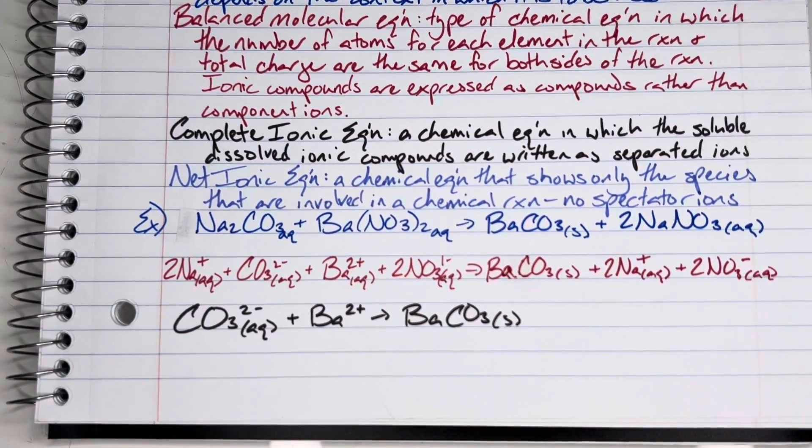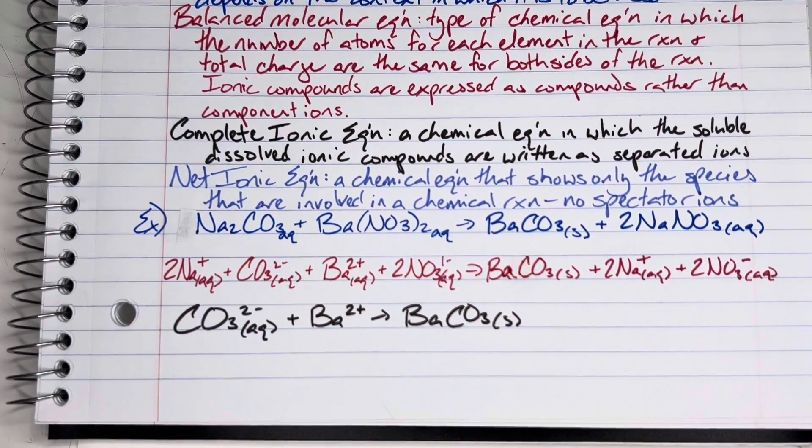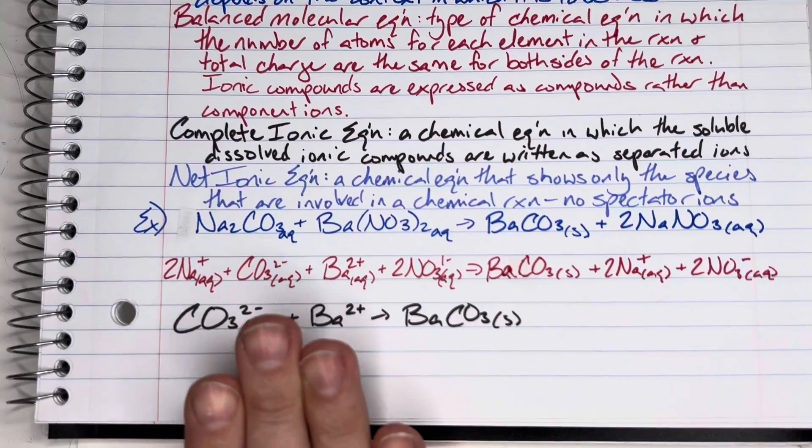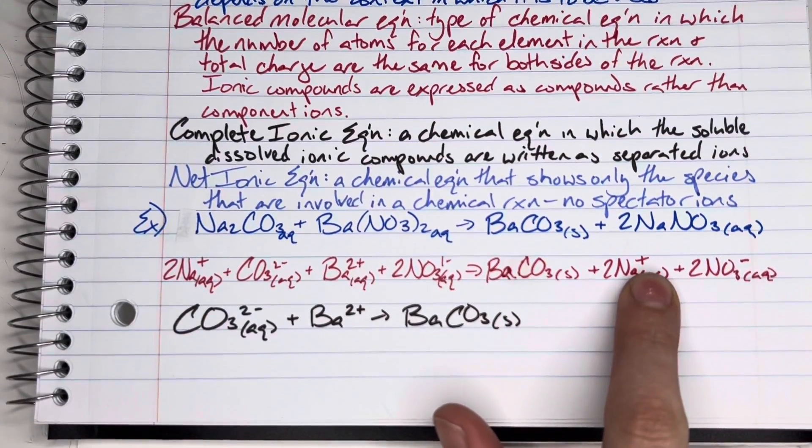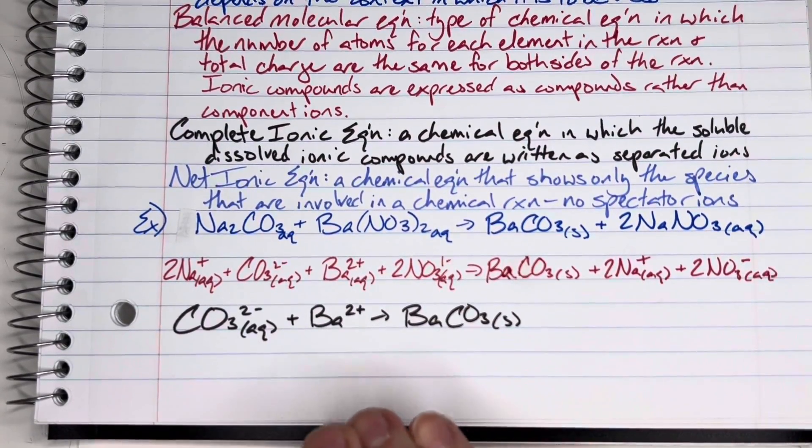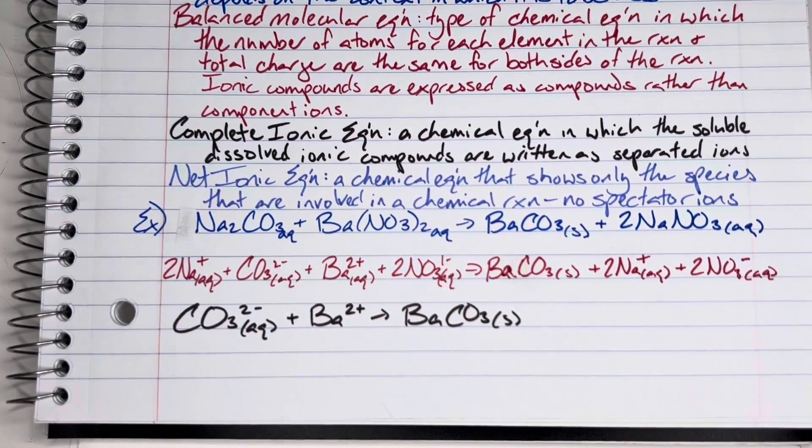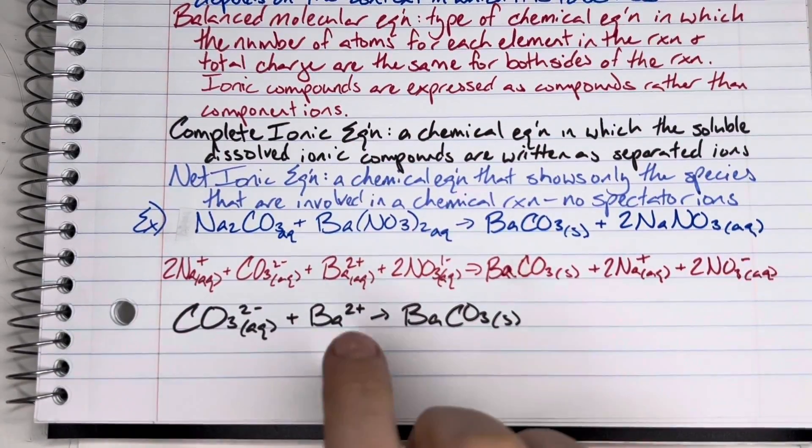Then my net ionic equation—I would just eliminate any and all elements or ions that do not change state from my reactant to my product. My sodium remained dissolved within the solution; it did not effectively change. It didn't form a new compound; it remained in the same state that it was at the very beginning, dissolved in the solution.